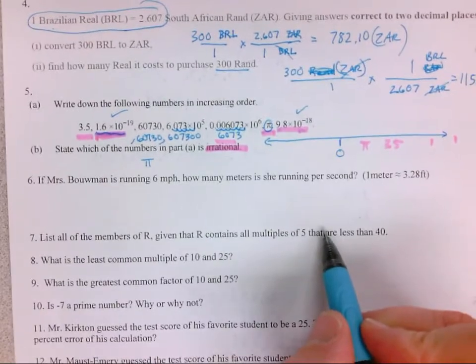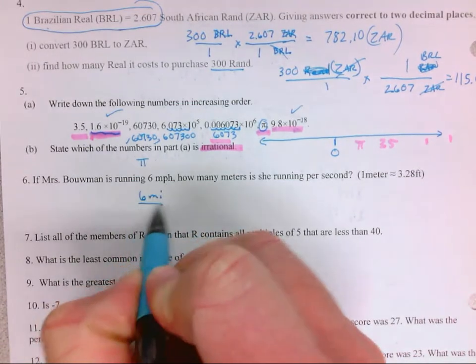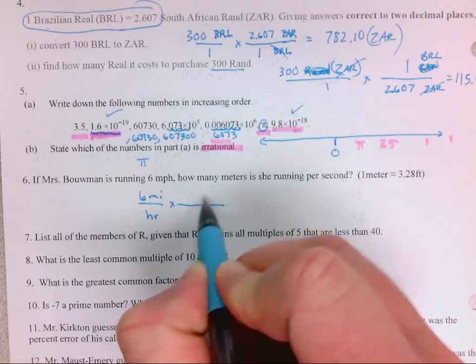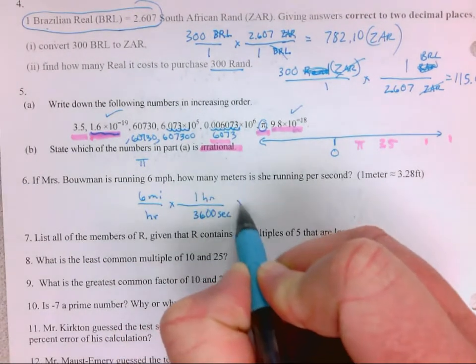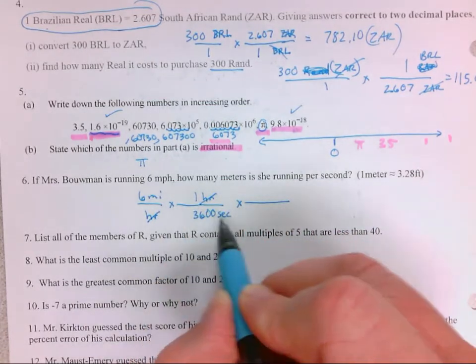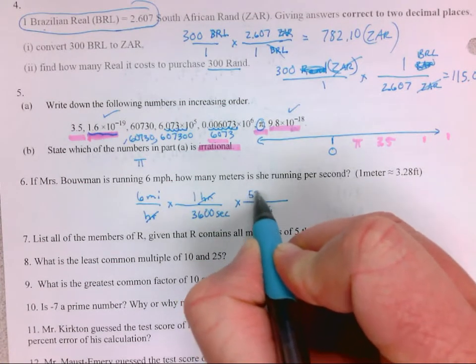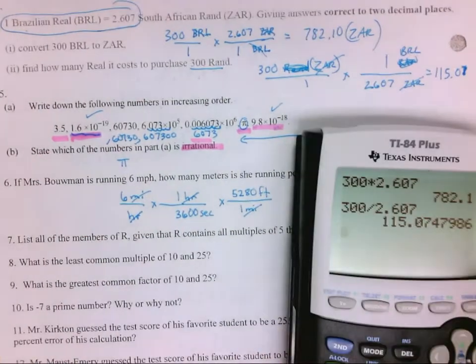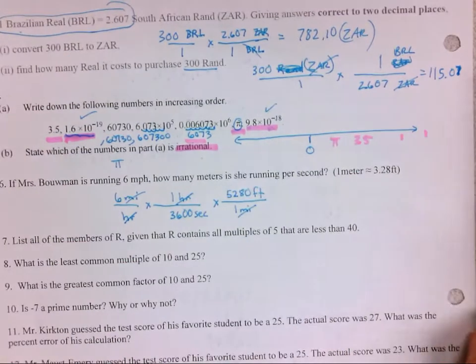Mrs. Bowman is running 6 miles per hour. How many meters is she running per second? 6 miles, 1 hour. That's a rate. We need to get hours into seconds. So that will cancel out the hours, and we got miles. I know how many feet are in 1 mile. 5,280 feet. So now the miles cancel out, we're left with feet per second. So 6 times 5,280 divided by 3,600 is 8.8 feet per second.